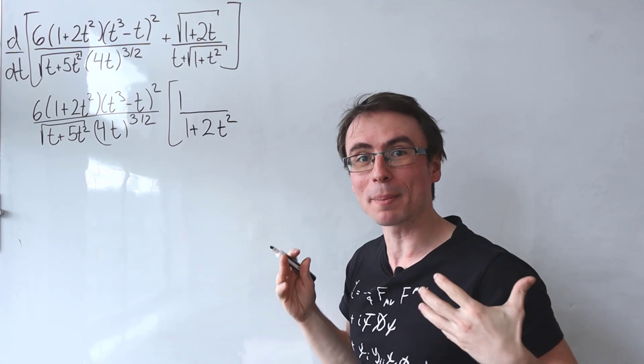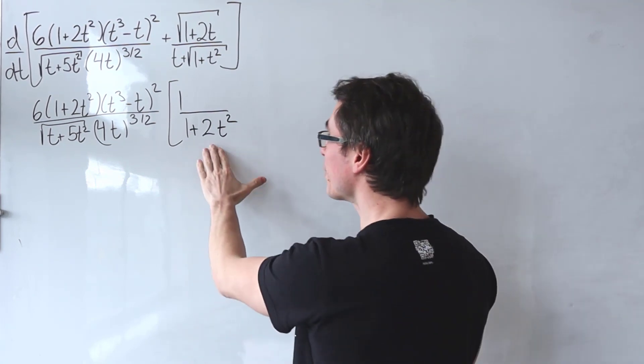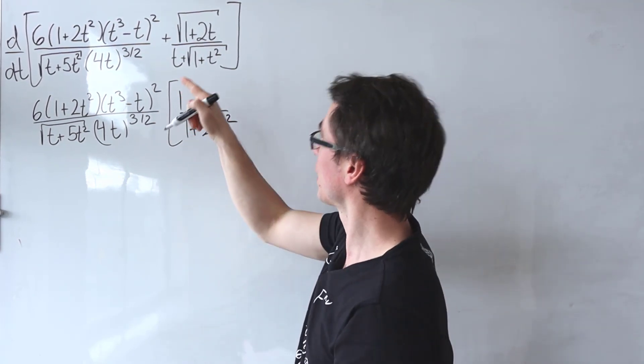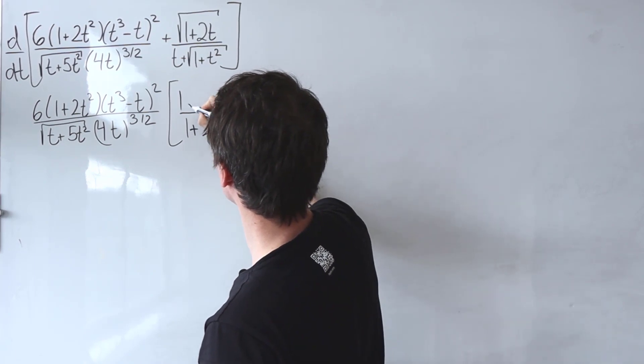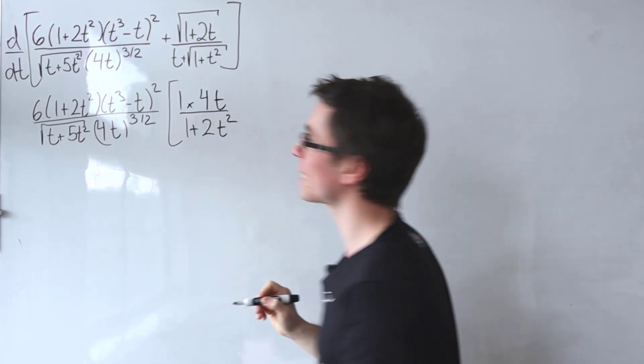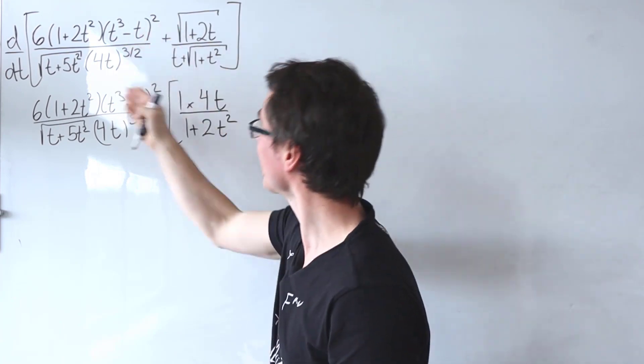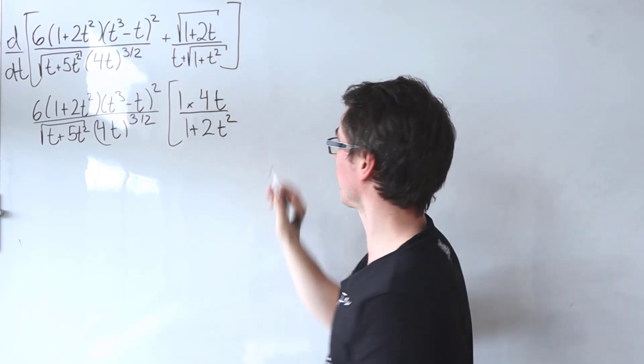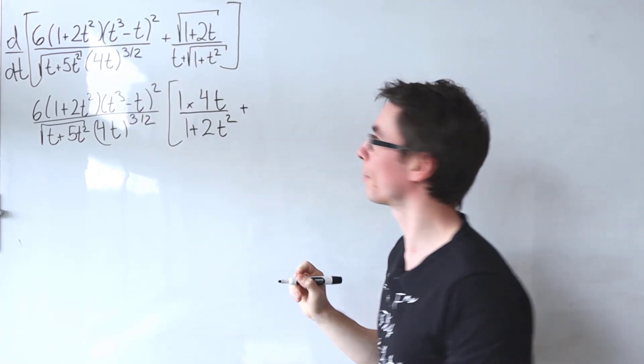And then at the top, I'm going to place the derivative of this, which in this case will just be equal to 4 times t. And now I'm going to repeat this step for each of the individual parts of this expression, summing them all up.